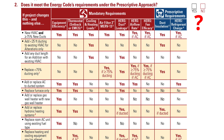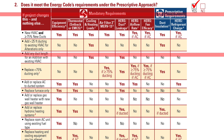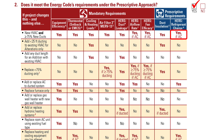Does it meet the energy code's requirements under the prescriptive approach? Yes, according to the table, a project that has a new heating, ventilation, and air conditioning system and greater than or equal to 75% new ducts can use the prescriptive approach. Be aware, though, that a footnote is also cited for this scenario in the table, which likely means some additional requirements apply.